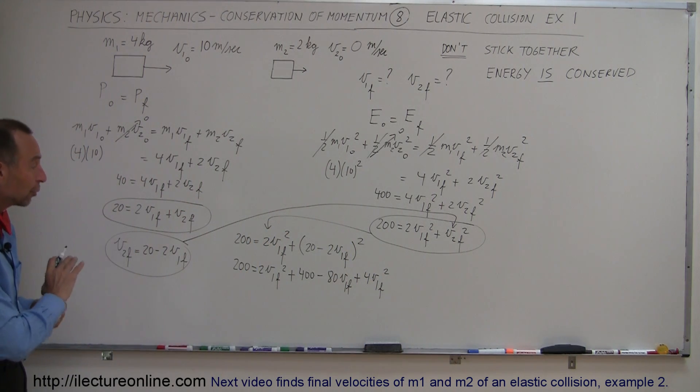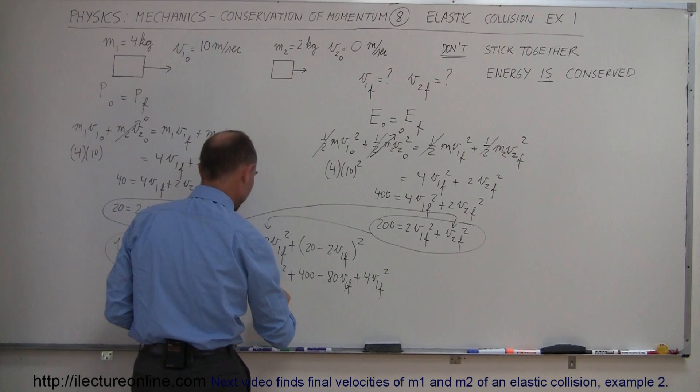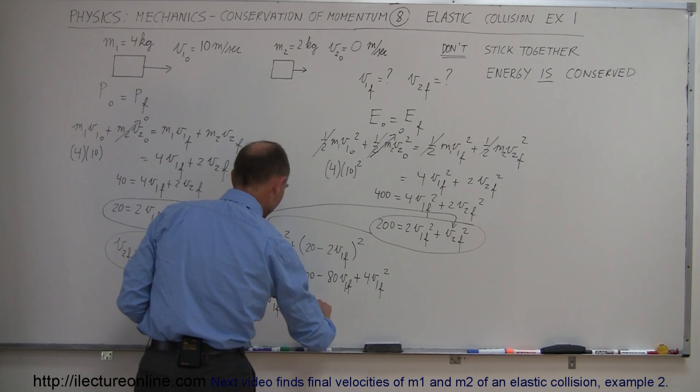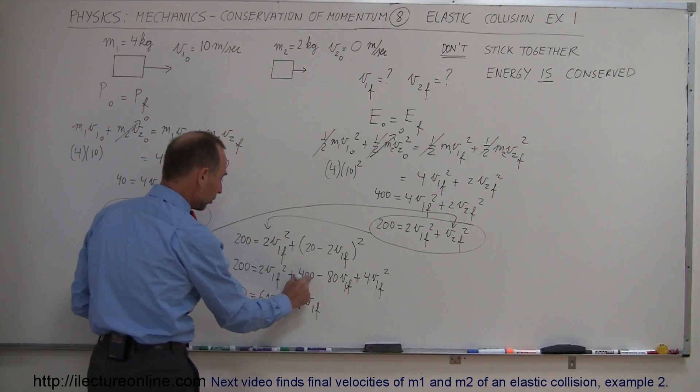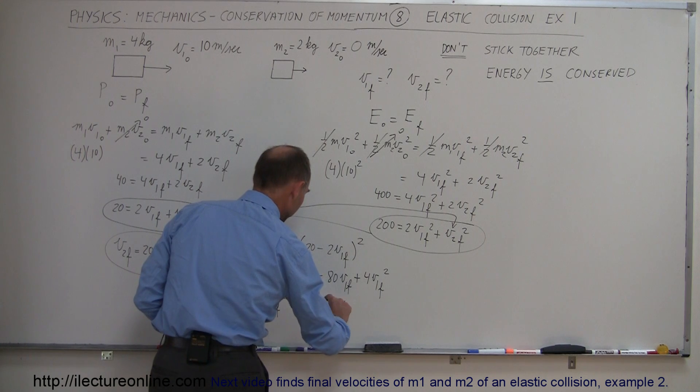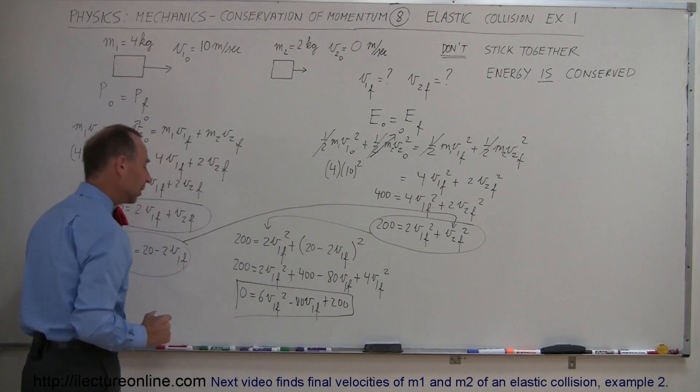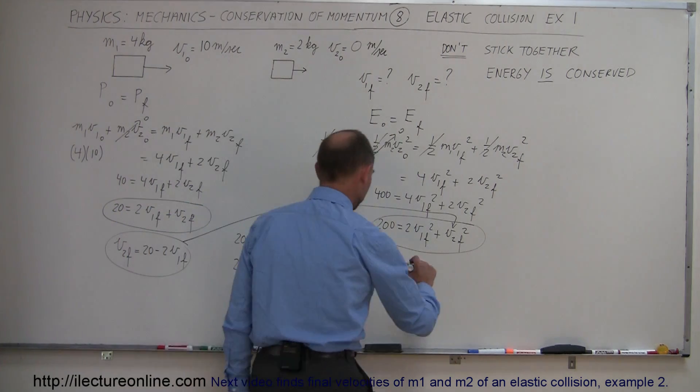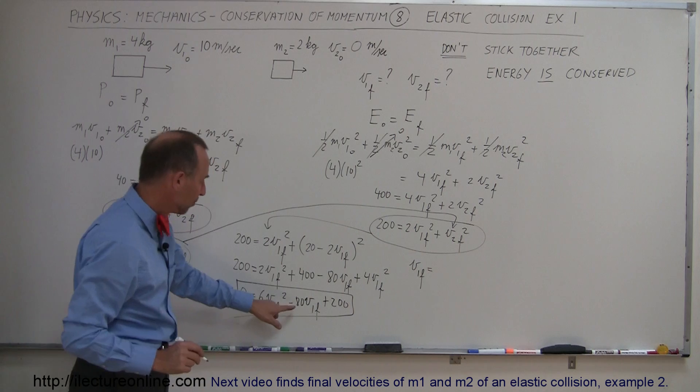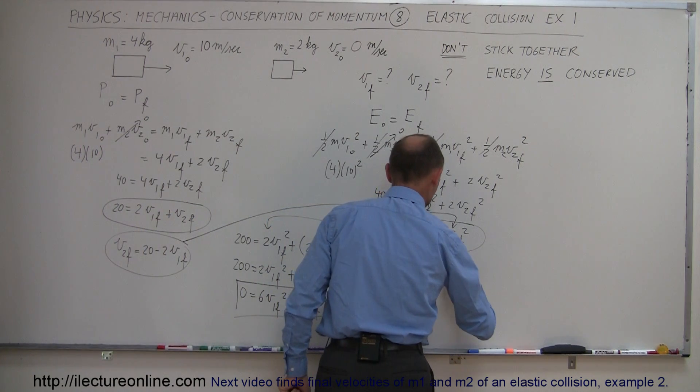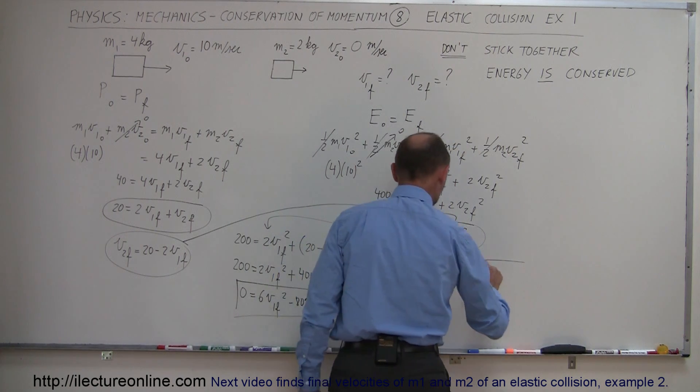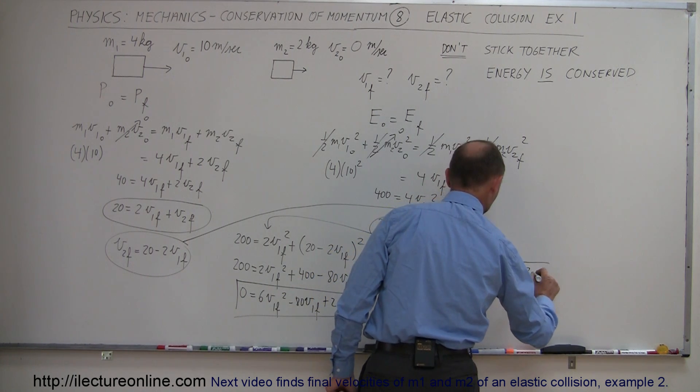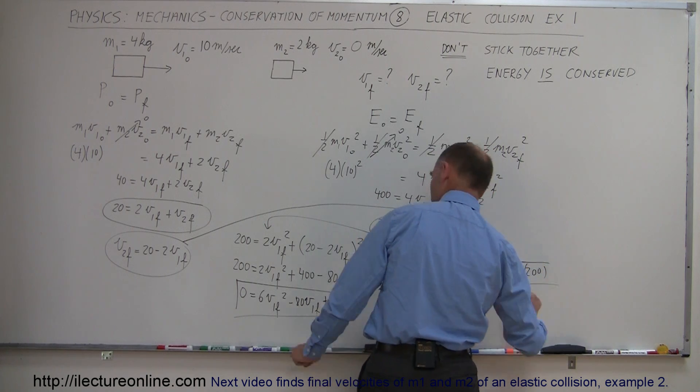Now I have a quadratic equation. I'll move everything over to one side, collect common terms. So we have 0 equals 2 plus 4 is 6V1 final squared, minus 80V1 final. And then if I bring the 200 over to the right side, 400 minus 200 gives me plus 200 for the constant. And here I have my quadratic equation that I can solve using the quadratic formula. So let's now solve that for V1 final. V1 final equals minus B, since B is minus 80, minus B would be plus 80, plus or minus the square root of B squared would be minus 80 squared, minus 4 times A, which is 6, times C, which is 200. And the whole thing is divided by 2A, which would be 12.